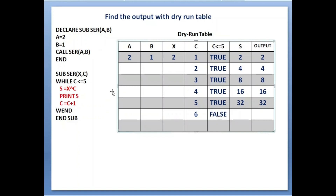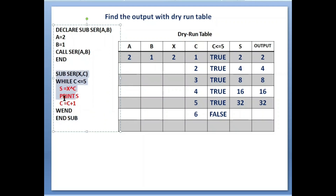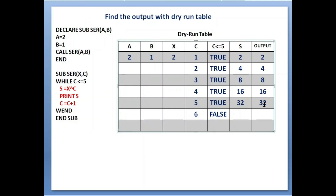When condition is false, the while loop ends and it will not execute the lines of code inside. It goes directly just after 'wend', where 'end sub' is written. End sub means the sub procedure task is completed, so control goes back to where the sub procedure was called from in the main module. Then it goes to the next line which is 'end' — end of the program. This is our dry run table and this is our final output: 2, 4, 8, 16, 32. Hope you understand. Thank you for watching!